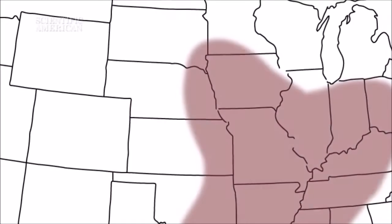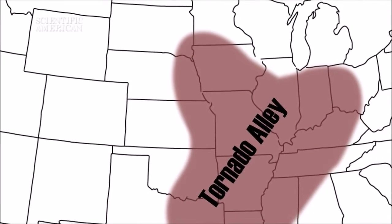Tornadoes occur on every continent except Antarctica, but more form over the central United States than anywhere else in a zone called Tornado Alley. That's because conditions in the alley are ideal for creating tornadoes.